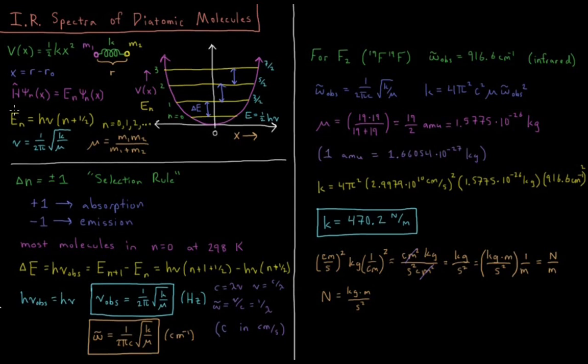We got that the energy as a function of a quantum number n equals h-nu times n plus one-half, where n was some integer starting at zero and going up to infinity.